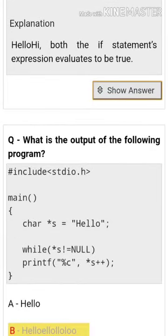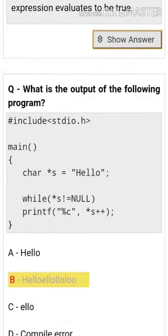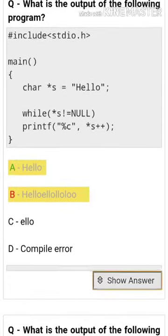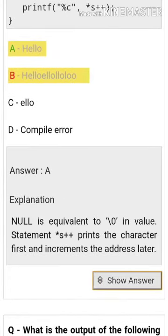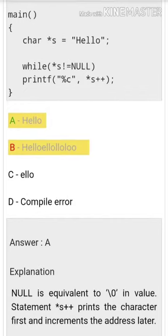What is the output of the following program? The answer is hello. Null is equivalent to zero in value statement. The pointer plus plus prints the character first and increments the address later.